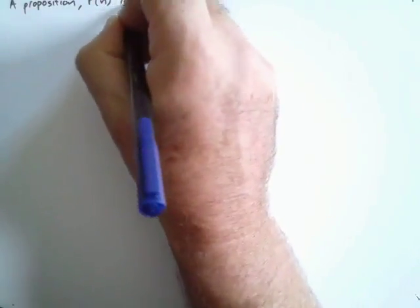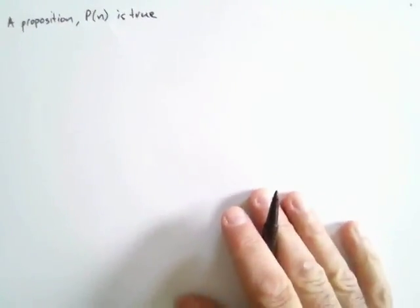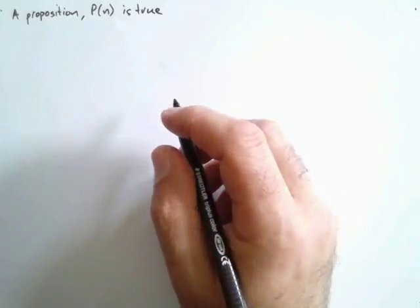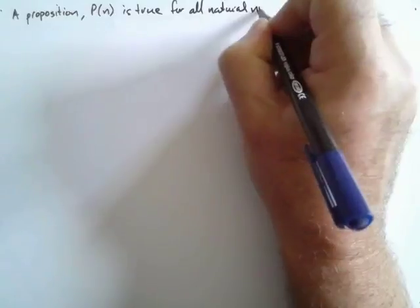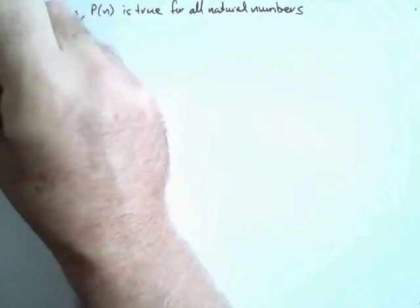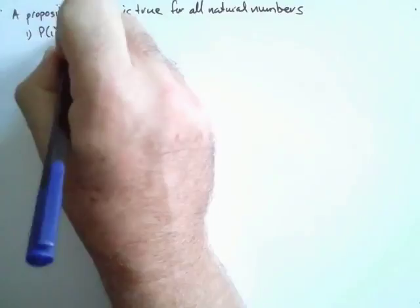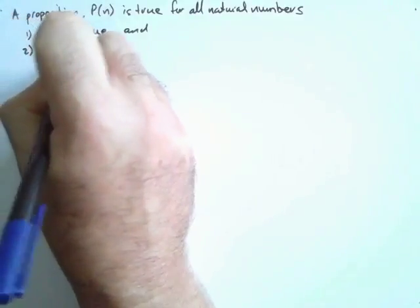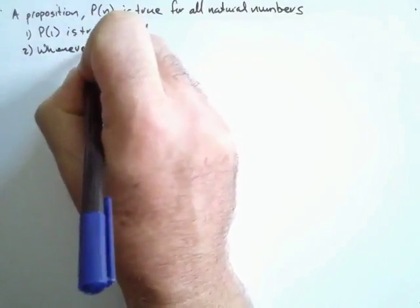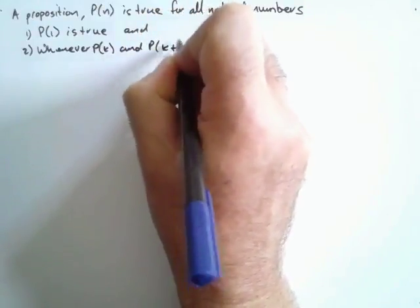Remember what we said about mathematical induction. A proposition P(n) is true under certain conditions, for all natural numbers. If P(1) is true, and secondly, whenever P(k) is true, P(k) is true and P(k+1) is true.